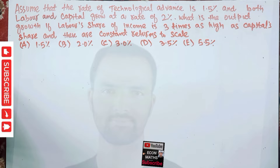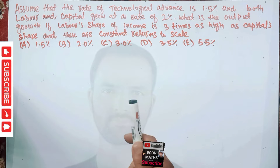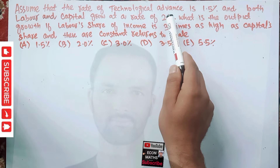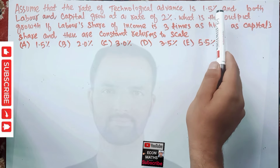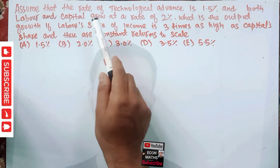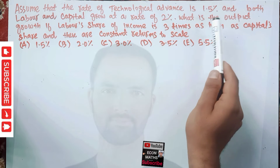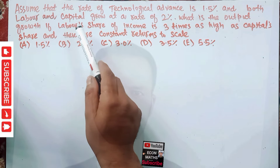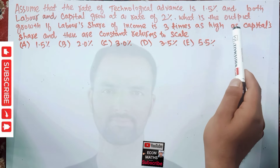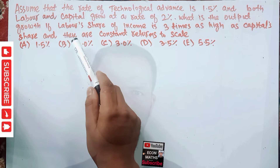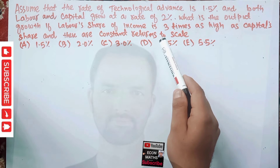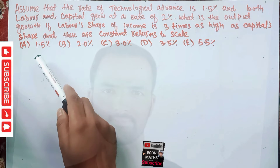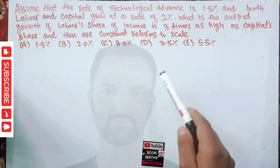Hi, this is Halal. In this video on the mathematical economics series, we will try to solve a problem on the growth equation. The question is: assume that the rate of technological advance is 1.5%, and both labor and capital grow at a rate of 2%. What is the output growth rate if the labor share of income is three times as high as the capital share?